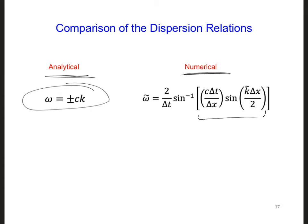So for the moment, if we assume k tilde is real, that means that this sine term in brackets is going to give a value between minus 1 and 1.